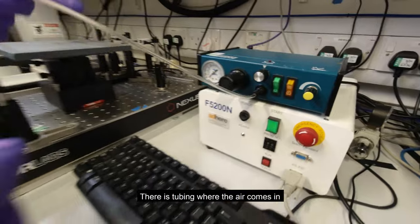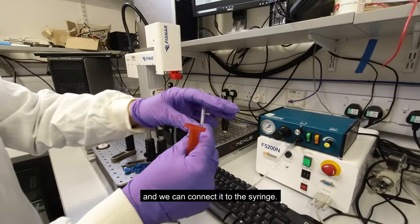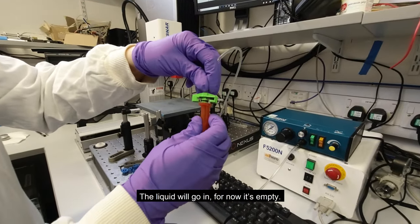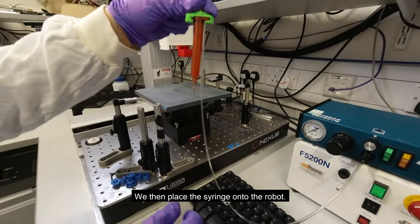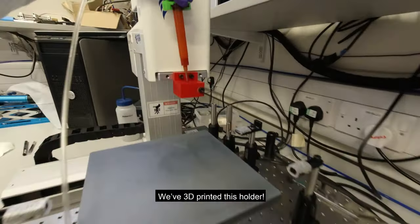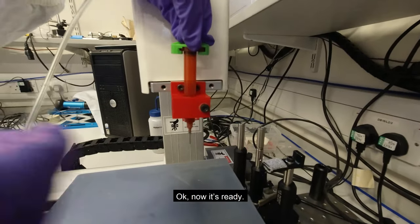Let's show you how it works. There is tubing where the air comes in and we can connect it to the syringe. The liquid will go in, for now it's empty. We then place the syringe onto the robot. We 3D printed this holder. Ok, now it's ready.